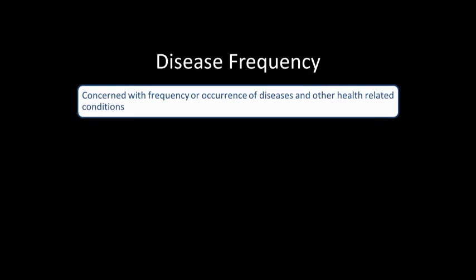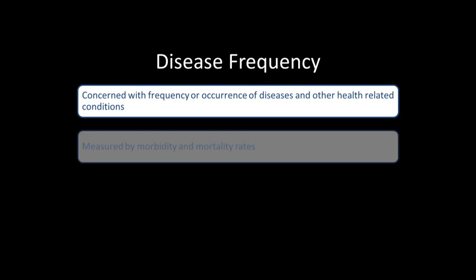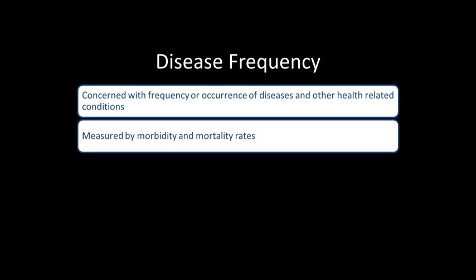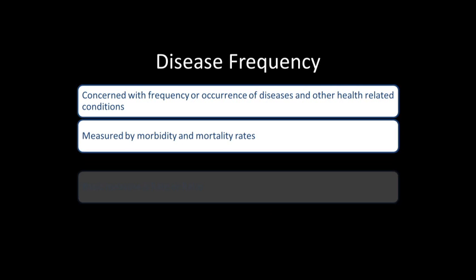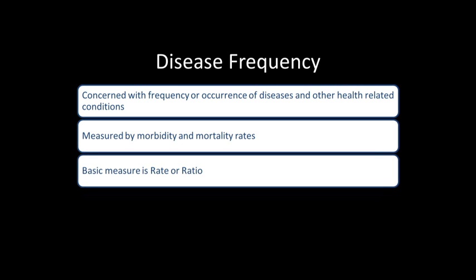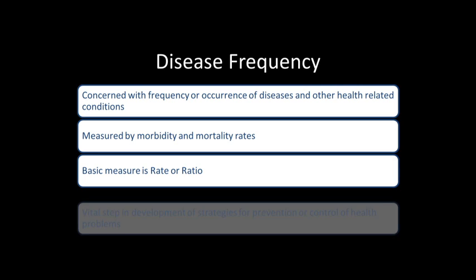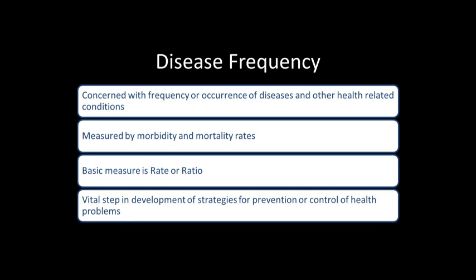Disease frequency is concerned with the frequency or occurrences of diseases and other health related conditions. It can be measured by morbidity or mortality rates. The basic measure is either a rate or a ratio, and it is a vital step in the development of strategies for prevention or control of health problems.